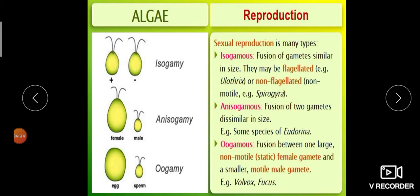Anisogamous means fusion of two gametes which are dissimilar in size — the female gamete is comparatively bigger than the male gamete. Example: some species of Eudorina show anisogamous reproduction.